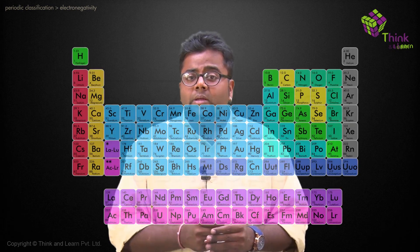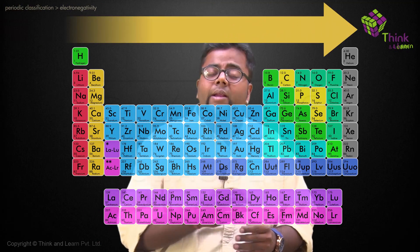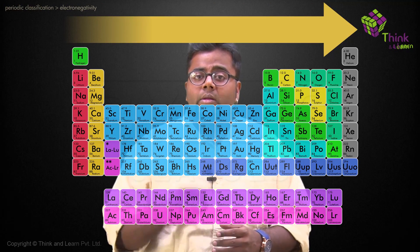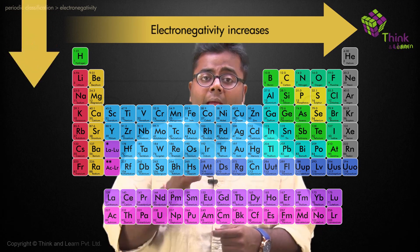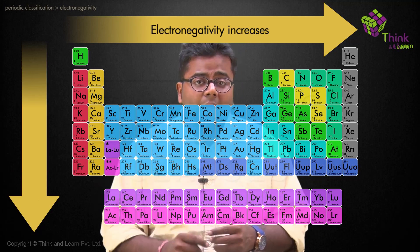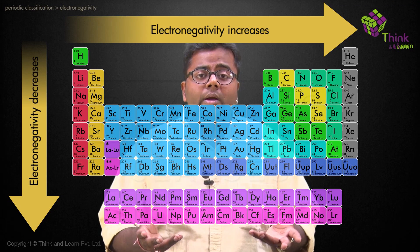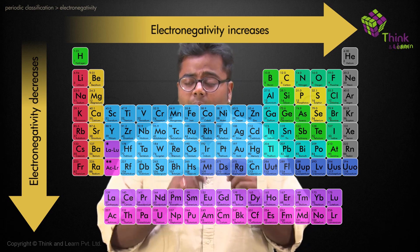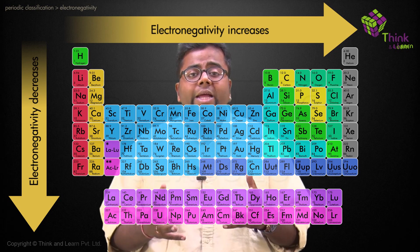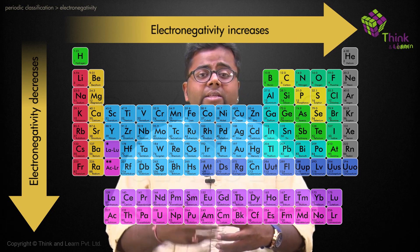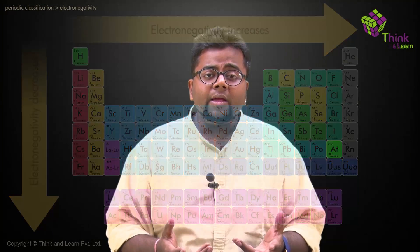Moving from left to right in a period, the electronegativity value increases, and going down the group, the electronegativity value decreases. This is because moving left to right in a period, the size is decreasing, and a decrease in size causes electronegativity to increase.